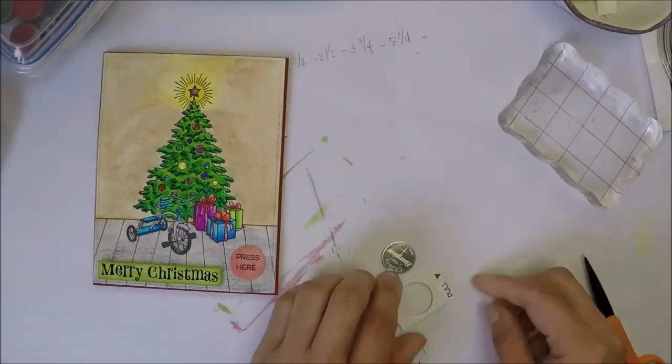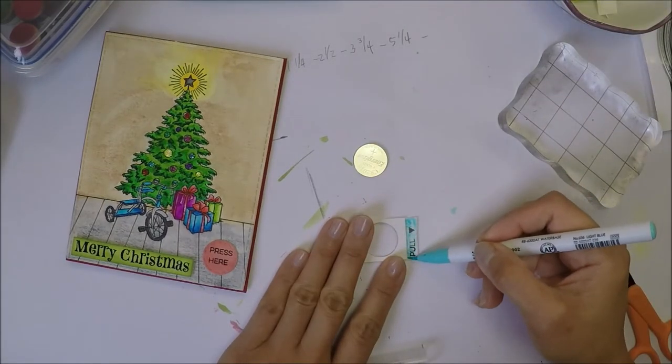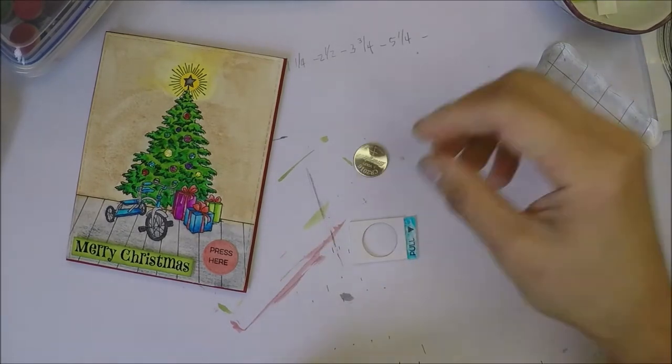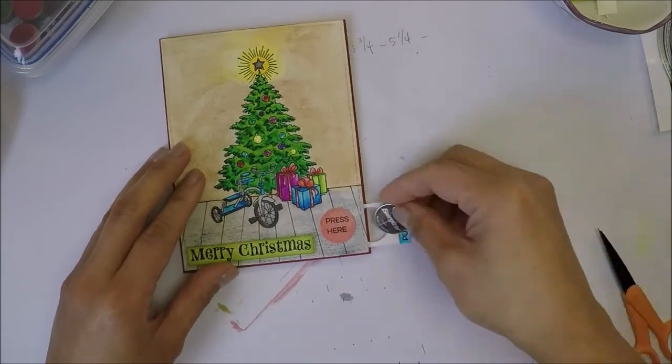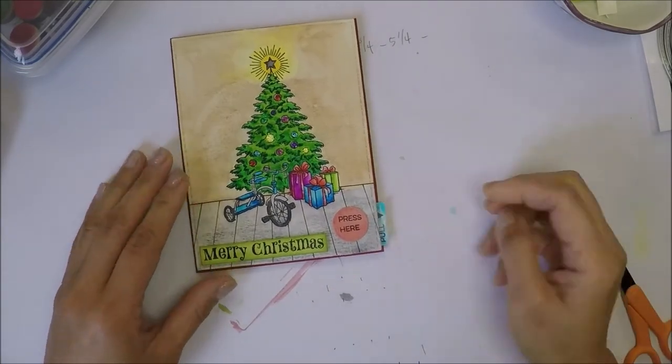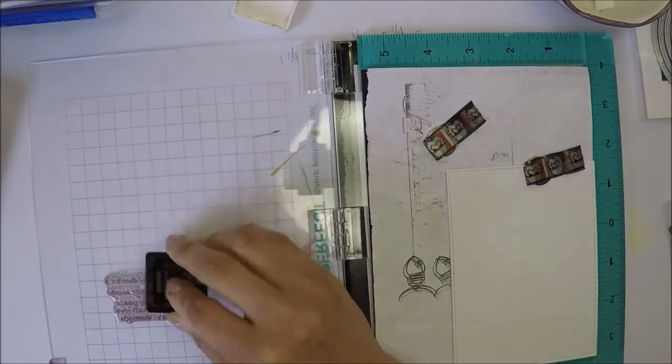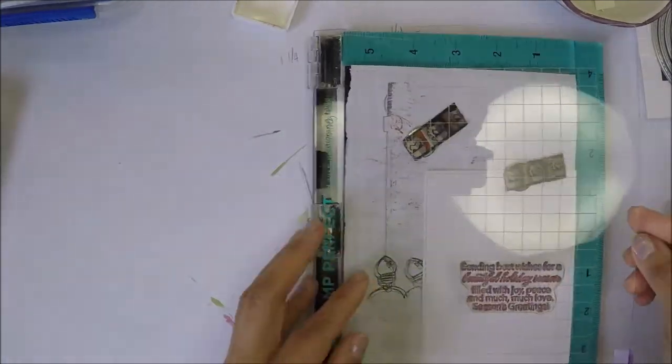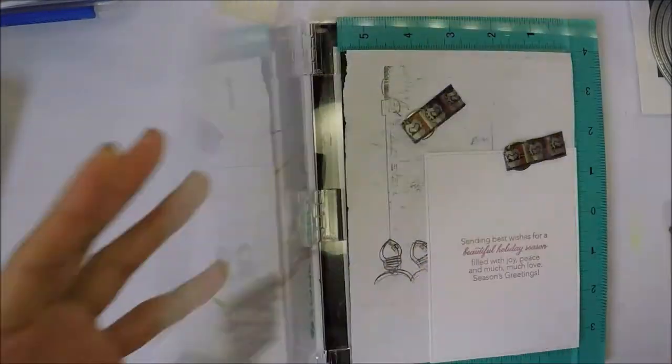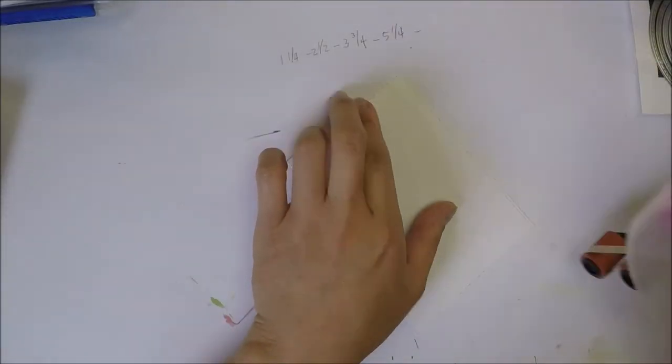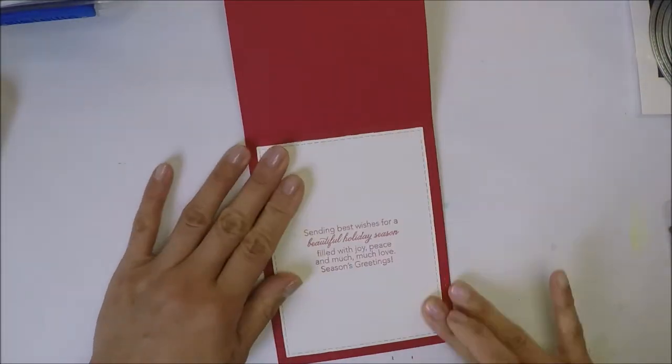I colored the battery holder with Cobalt Blue Zig Marker and I think it looks better than just plain white. For the inside of the card, I die cut another panel and I stamped the sentiment from Papertrey Ink Holiday stamp set with Hero Arts Red Reactive Ink. I add dry adhesive on the back of this panel and then we'll go ahead and adhere this on the inside of our card.